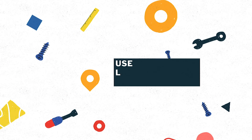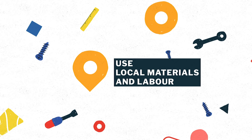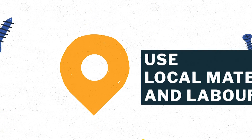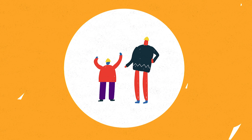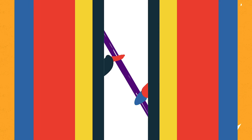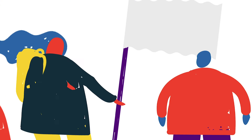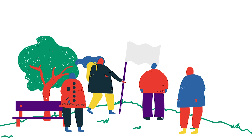Step 3: Use local materials and contractors, ensuring that children and labourers are protected along the entire supply chain. Step 4: Work with children to decide how to use the space after construction. This allows them to take ownership of the space and contributes to its sustainability.